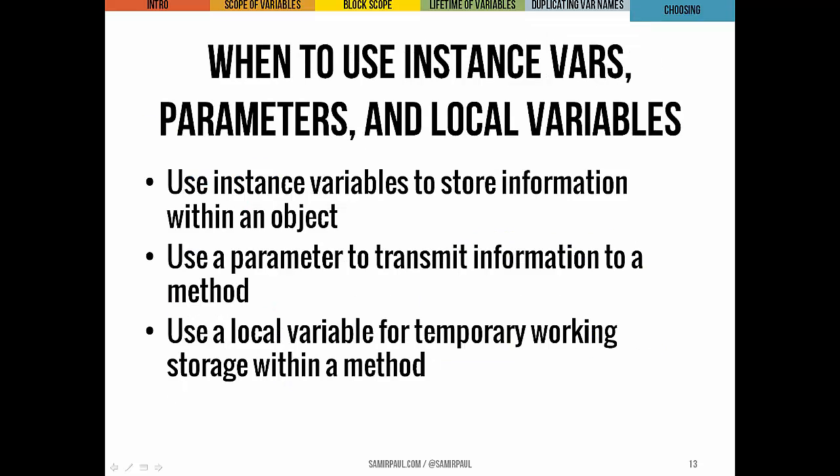With these different types of variables, it's important to have a good plan for when to use which type. If an object needs to remember a piece of information, use an instance variable. If we want to send information between two methods, use a parameter. And if we want temporary working storage inside a method, use a local variable. There are a few ways to get this wrong, so let's look at some examples.